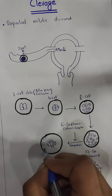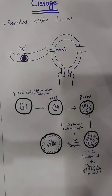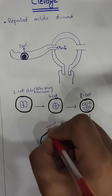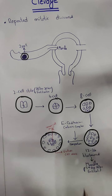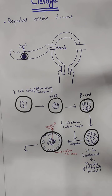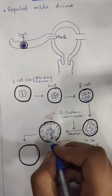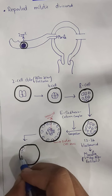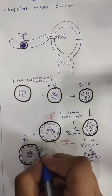Some cells are on the side and some are on the inside. We call this the inner cell mass and the outer cell mass. After compaction, in the next stage, fluid from the uterine cavity moves into the space, pushing the outer cell mass to the sides and the inner cell mass to the center.